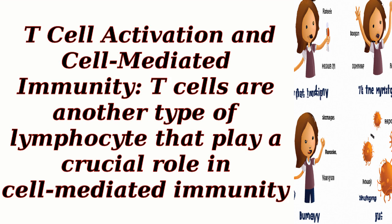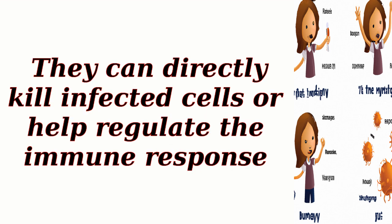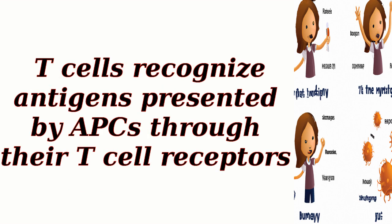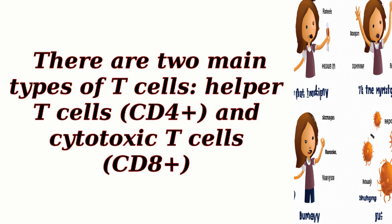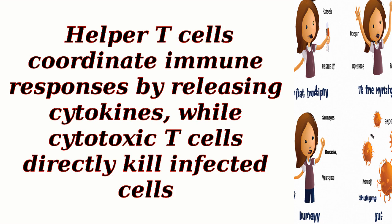T-cell activation and cell-mediated immunity: T-cells are another type of lymphocyte that play a crucial role in cell-mediated immunity. They can directly kill infected cells or help regulate the immune response. T-cells recognize antigens presented by APCs through their T-cell receptors. There are two main types: helper T-cells (CD4+) and cytotoxic T-cells (CD8+). Helper T-cells coordinate immune responses by releasing cytokines, while cytotoxic T-cells directly kill infected cells.